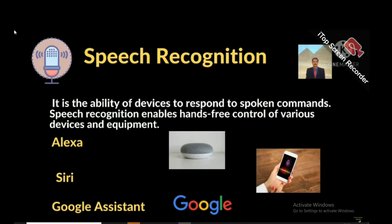Google Assistant. We can give voice commands for our searches and it will execute. If you say tell me about Kolkata, it will give information about Kolkata. If you say tell me about Delhi, it will give information about Delhi, or whatever you want.